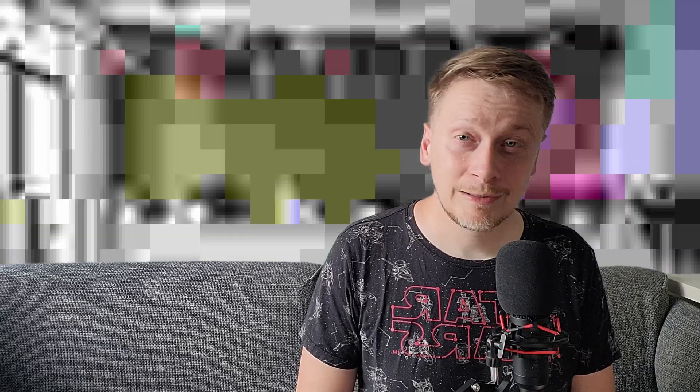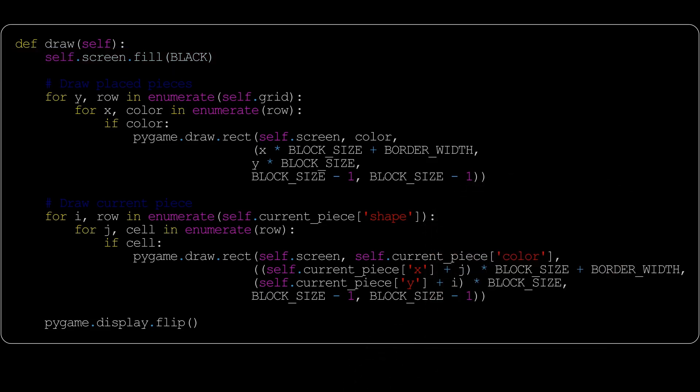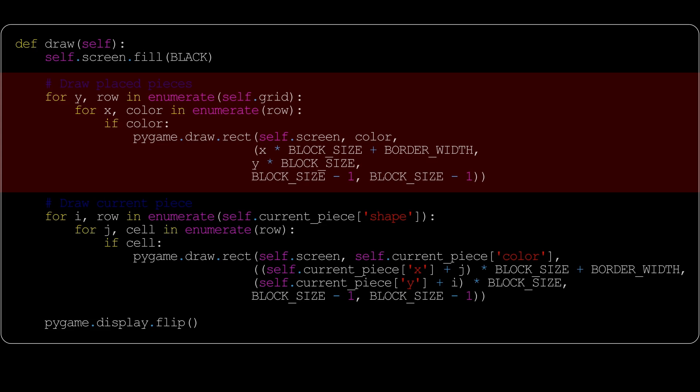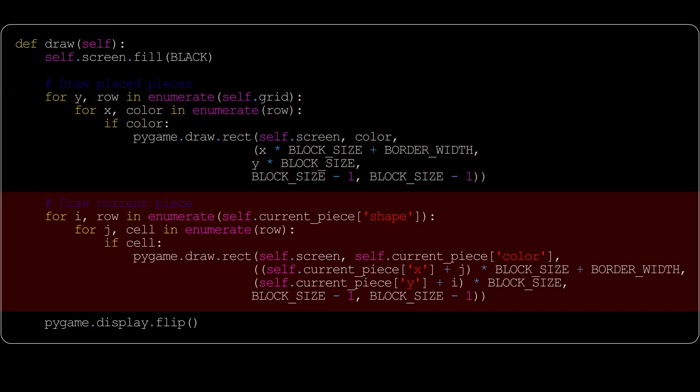Continuing with update and draw — the drawing itself can be tackled in several ways. What we do here is have two blocks: one for drawing placed pieces that are already part of the grid, and a second one to draw the current falling piece. The first line is important — you should fill everything black. If you don't, you would see ghosts from the previous frames. For drawing the grid pieces, we use Python's enumerate on the grid. Enumerate returns the row number and the row itself, followed by enumeration of the row which returns each cell and its color. We then draw a rectangle using the constants defined at the beginning. Drawing the current piece is quite similar, except the first enumerate refers to the current piece rather than the grid.